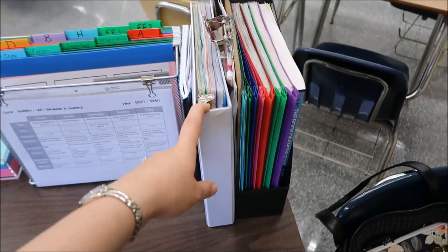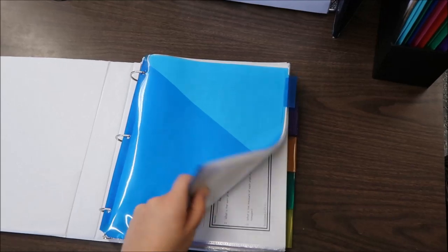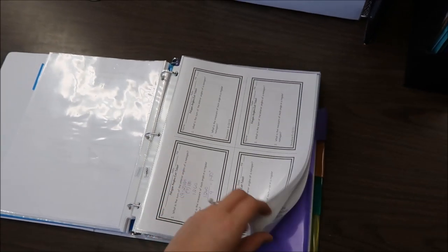The next thing that I have on my desktop is my binder and this is where I keep everything that I'm currently doing in my courses. So this first section is for everything in geometry and anything that we're doing in this current unit is in here.